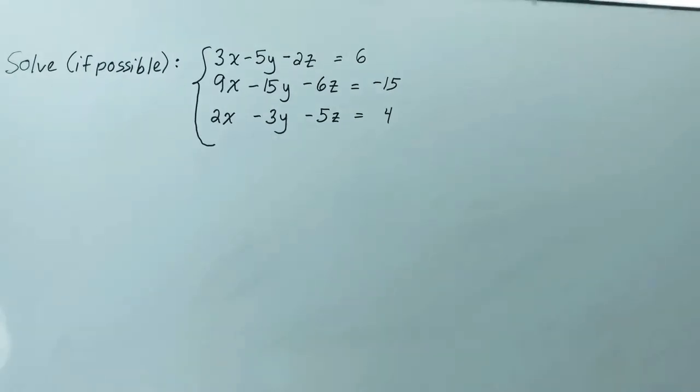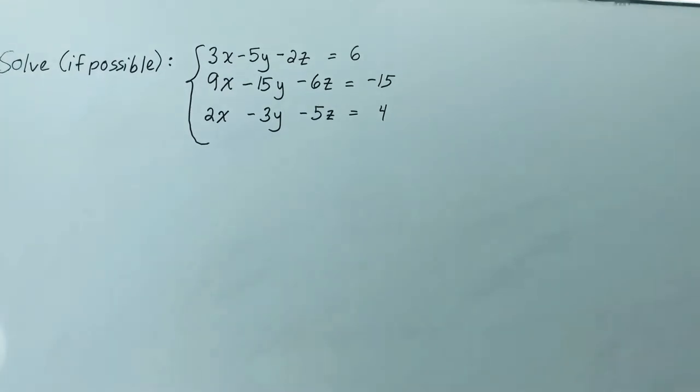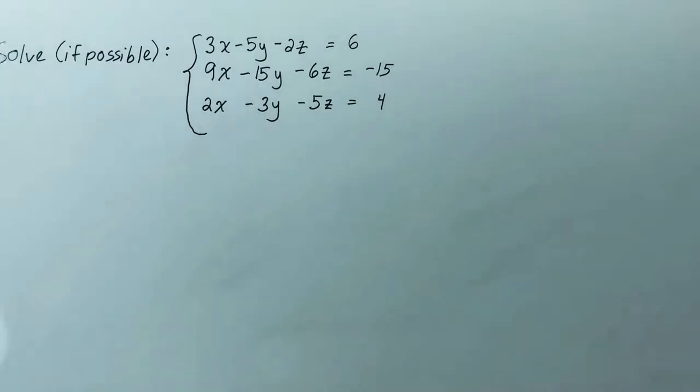We have 3x minus 5y minus 2z equals 6, 9x minus 15y minus 6z equals negative 15, and 2x minus 3y minus 5z equals 4.